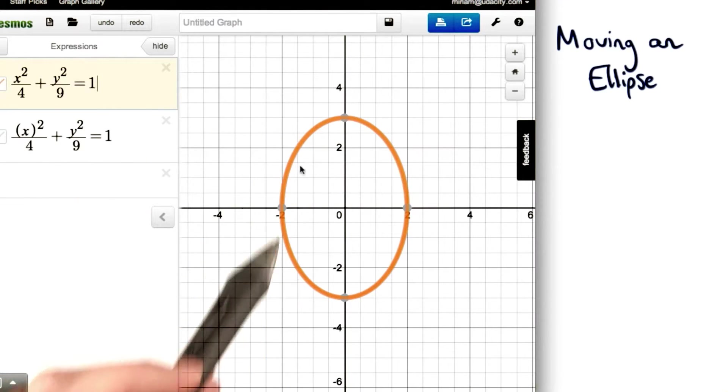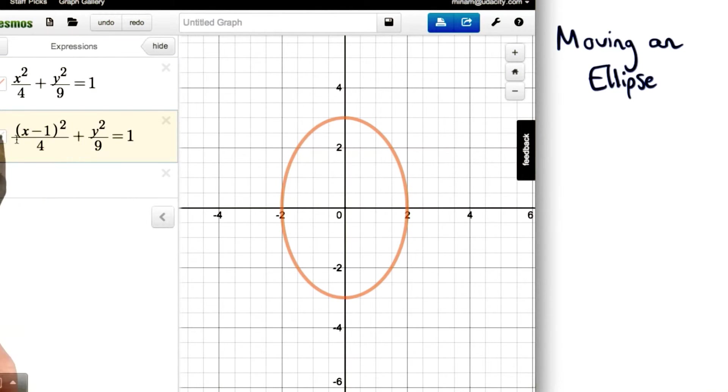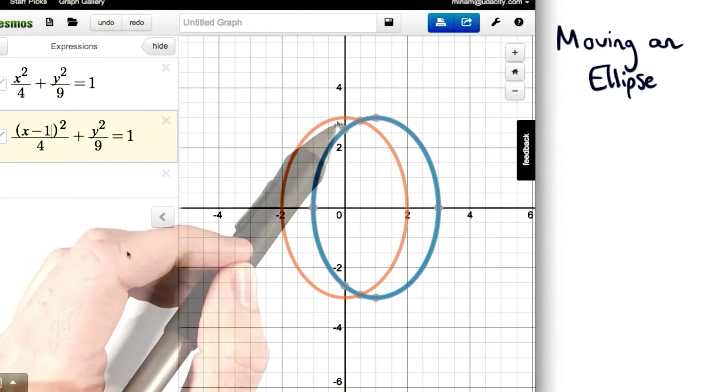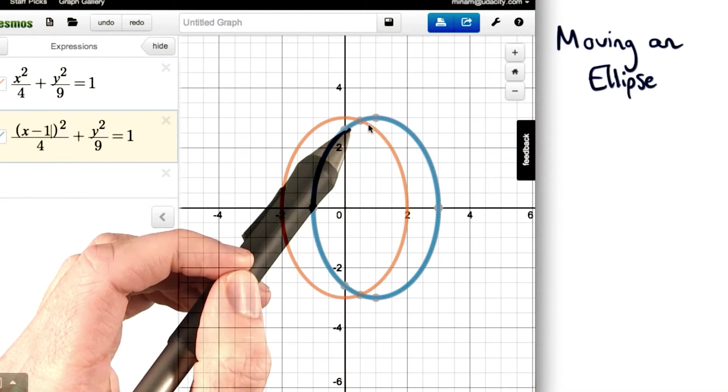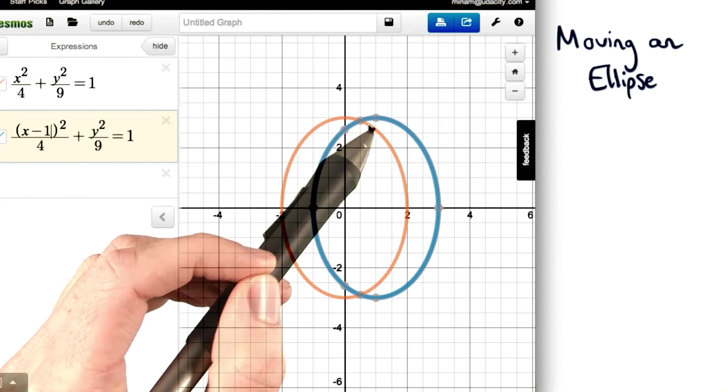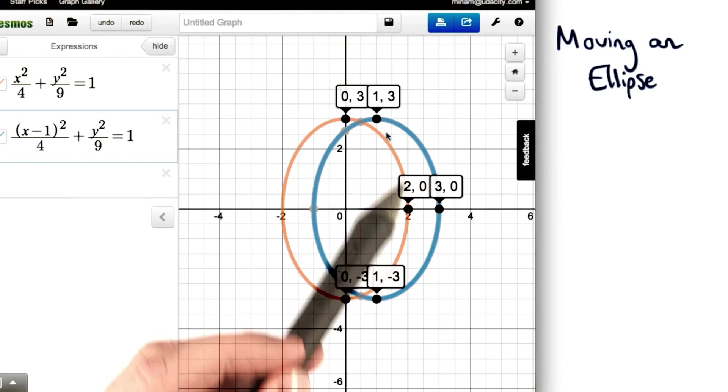So again, notice that I have my original graph, and this time I'm going to subtract one from x. If I subtract one from x, I'll get this graph. Notice that all the points on our ellipse shifted one unit to the right. Here's just a few of the points that you can see that all shifted one unit to the right.